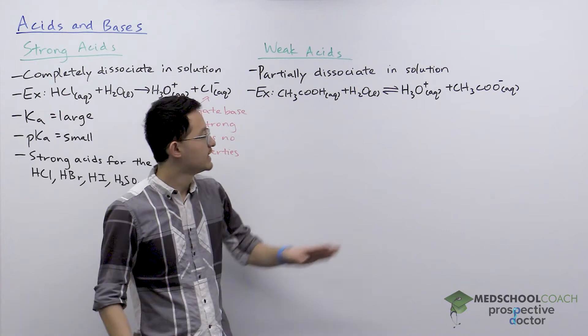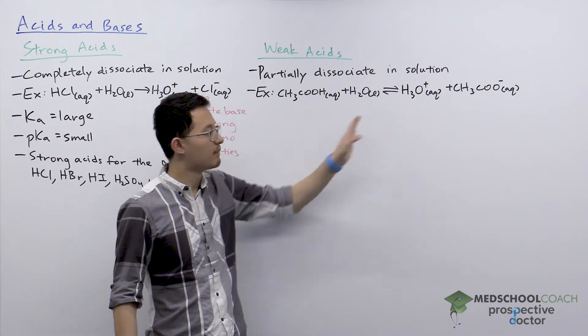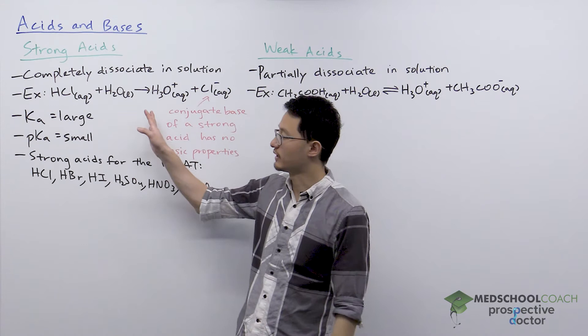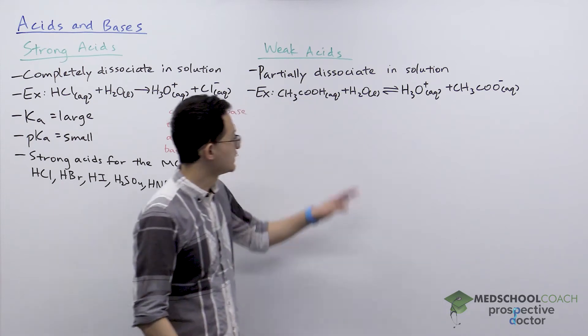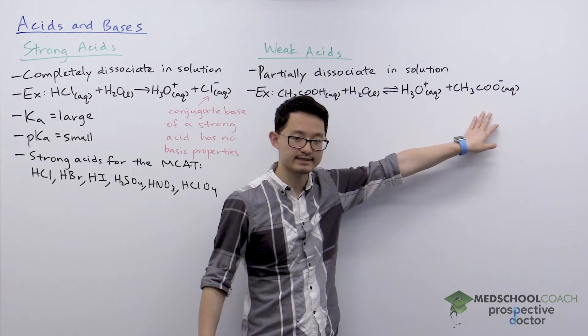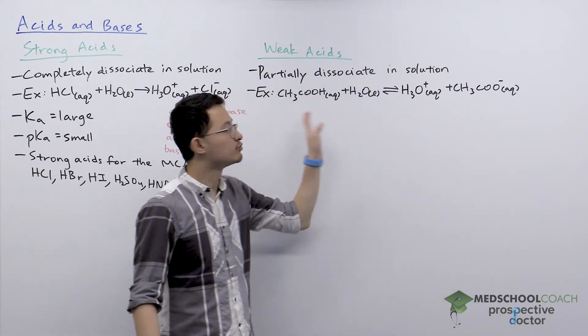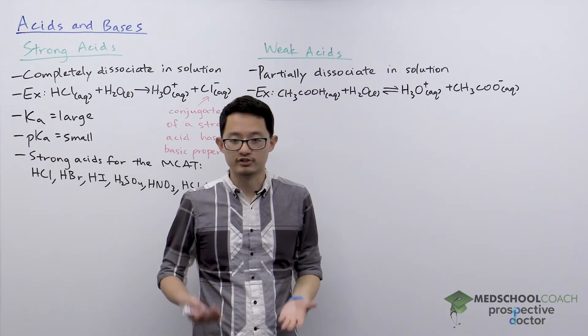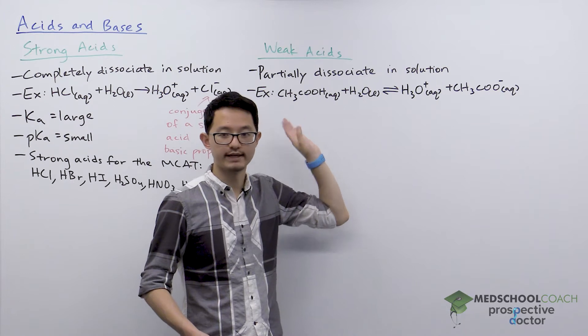However, you can see a difference here is here we have the equilibrium arrows. The equilibrium arrows shows that both the forward and reverse reactions are proceeding, as opposed to the strong acid where there's a forward arrow only showing complete dissociation. So what this means is that as acetic acid dissociates to form hydronium ion and acetate, some of the acetate ions in solution will accept a proton to reform acetic acid. This is the reason why weak acids don't dissociate completely. Some of their dissociated ions will reform their original weak acid.